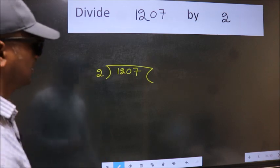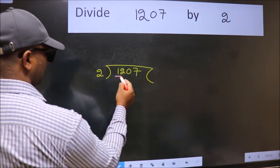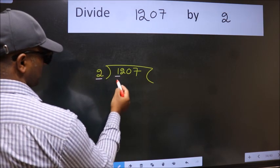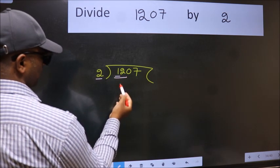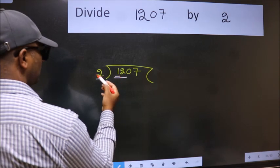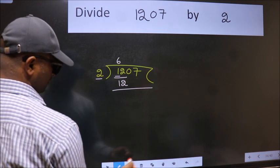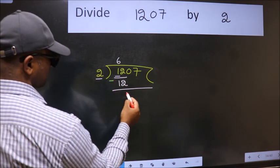Next. Here we have 1 and here 2. 1 is smaller than 2, so we should take 2 numbers: 12. When do we get 12 in the 2 table? 2 times 6 is 12. Now we should subtract. We get 0.